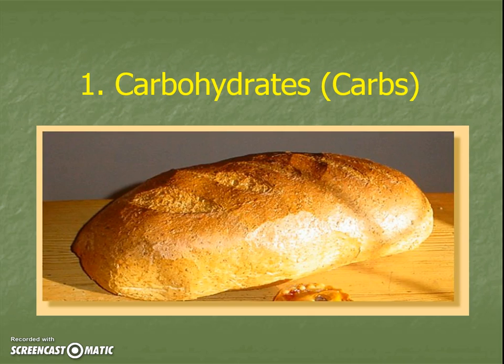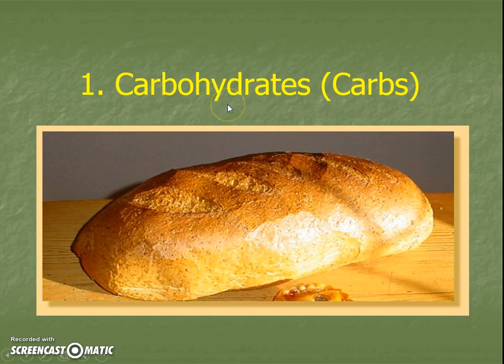Our first type is carbohydrates. Sometimes we'll just call these carbs. These are your breads, your pastas, your rice — carbohydrates. The same ones that you would eat before a big game. That's our first category — this is a type of macromolecule, or a polymer.